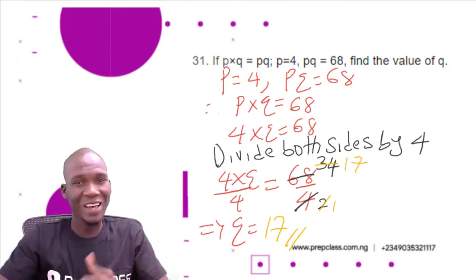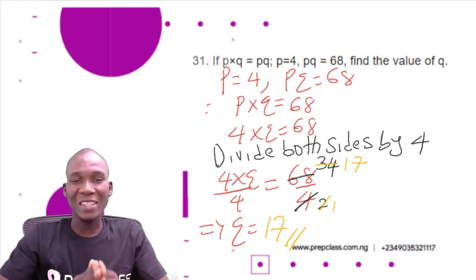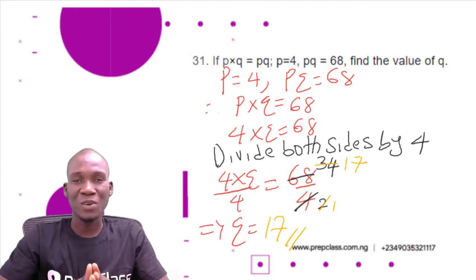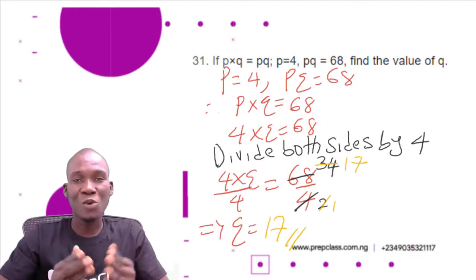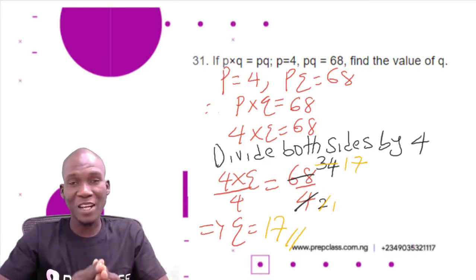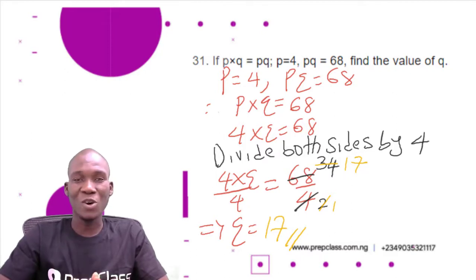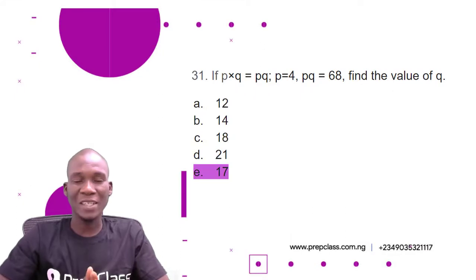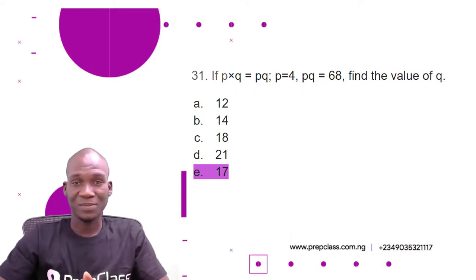It's actually easy — all you need is to understand that pq is the same as p multiplied by q. You have the value for pq and the value for p, so you find q, which is 17. The correct option is option E: 17.